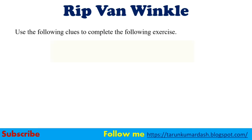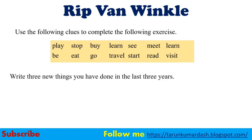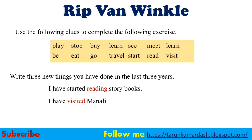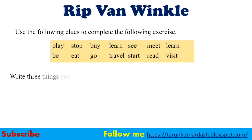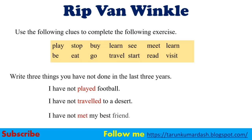Use the following clues to complete the exercise: play, step, buy, learn, see, meet, be, eat, go, travel, start, read, visit. Write three new things you have done in the last three years: I have started reading story books in the last 3 years. I have visited Manali. I have stopped eating noodles. Now write three things you have not done in the last three years: I have not played football. I have not traveled to a desert. I have not made my best friend.